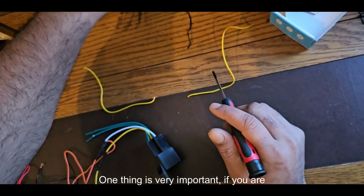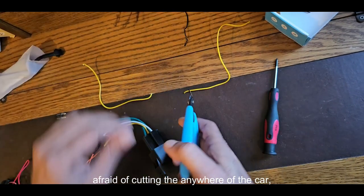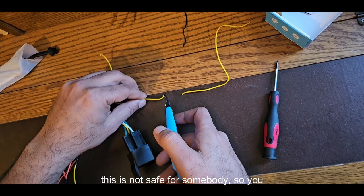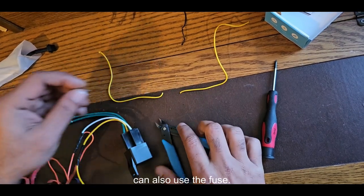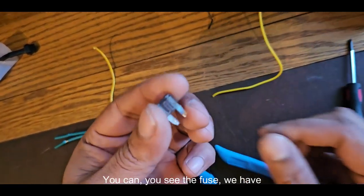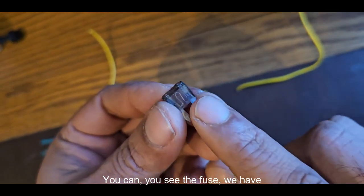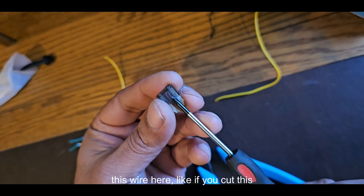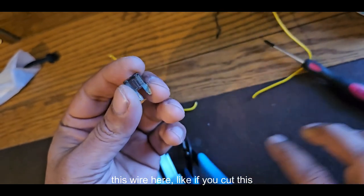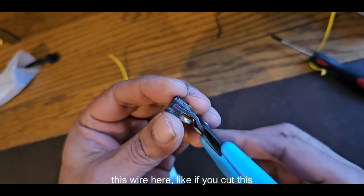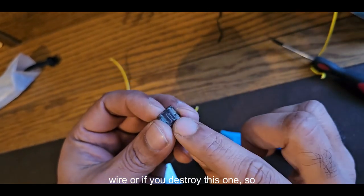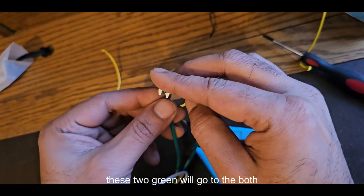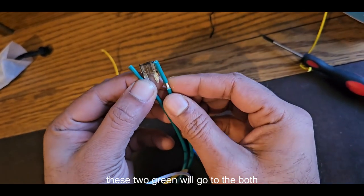One thing is very important. If you are afraid of cutting anywhere on the car, this is not safe for somebody. So you can also use the fuse. You see the fuse. You have to destroy this connection, this wire here. Like if you cut this wire, or if you destroy this one, these two green will go to both legs.